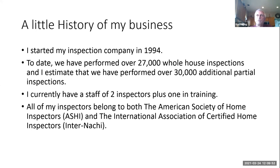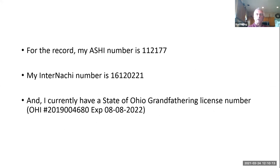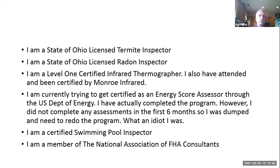I currently have a staff of two inspectors plus one going through InterNACHI training — I used to have five inspectors. All of my inspectors belong to both ASHI and InterNACHI. My ASHI certification number is 112-177, and my InterNACHI number is 161-202-21. I currently have a State of Ohio grandfathering license number. I'm a State of Ohio licensed termite inspector and a State of Ohio licensed radon inspector.